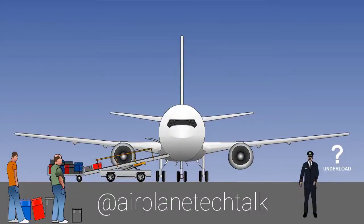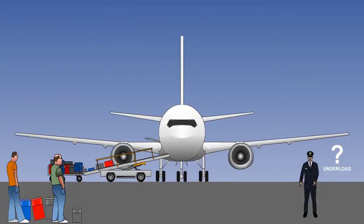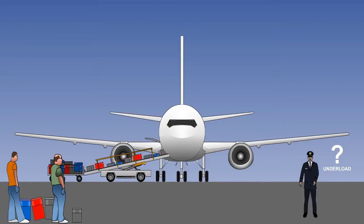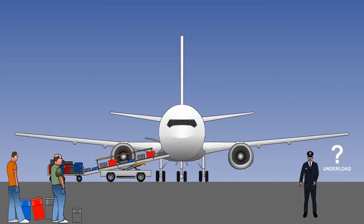In this lesson, we'll be using a formula method to determine something called underload. Underload is defined as the difference between the allowable traffic load and the actual traffic load. Practically, it represents any spare capacity that may be available for loading onto the aeroplane at the last minute, without any limitations being exceeded.